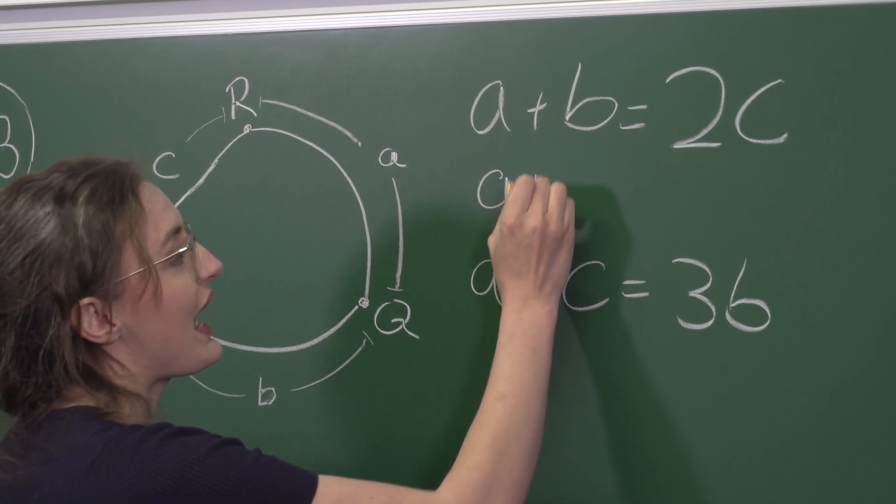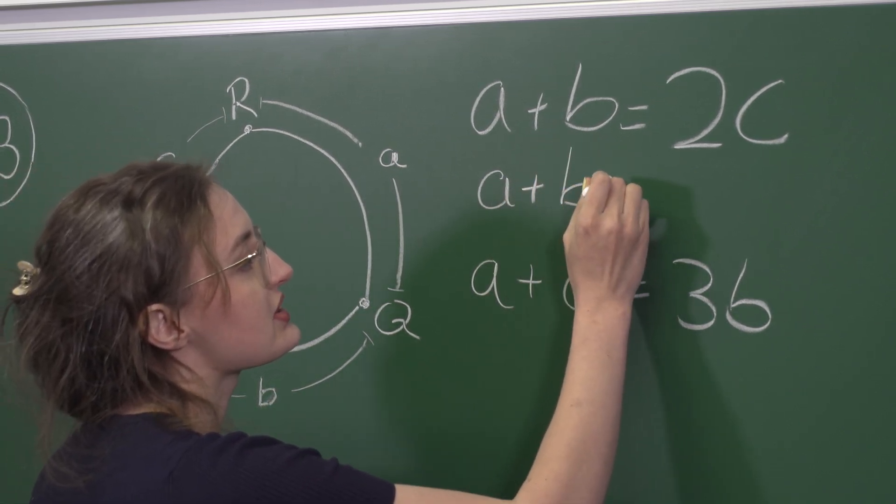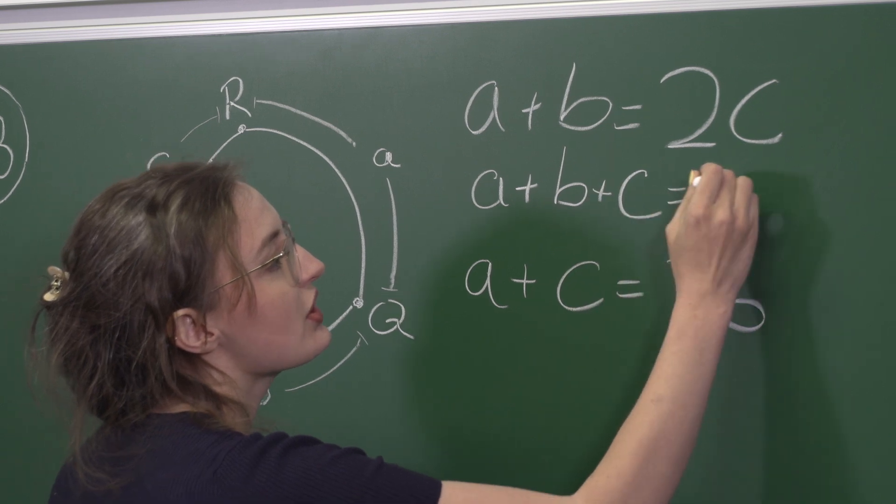This first one if we add C to both sides we get A plus B plus C equals 3C.